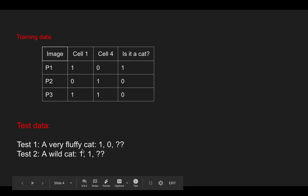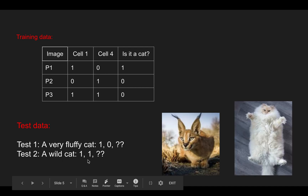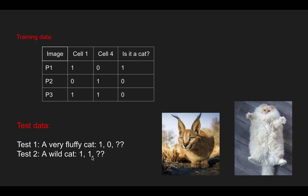I chose an image of a very fluffy cat, which has a cell one value of 1 and a cell four value of 0, and a second image of a wild cat, which has a cell one value of 1 and a cell four value equal to 1.